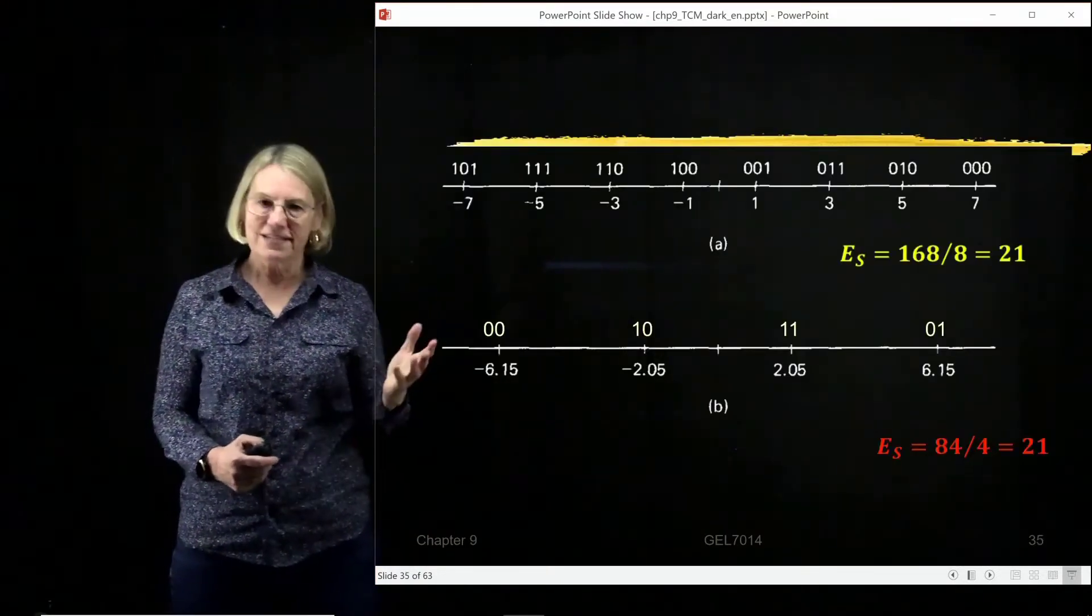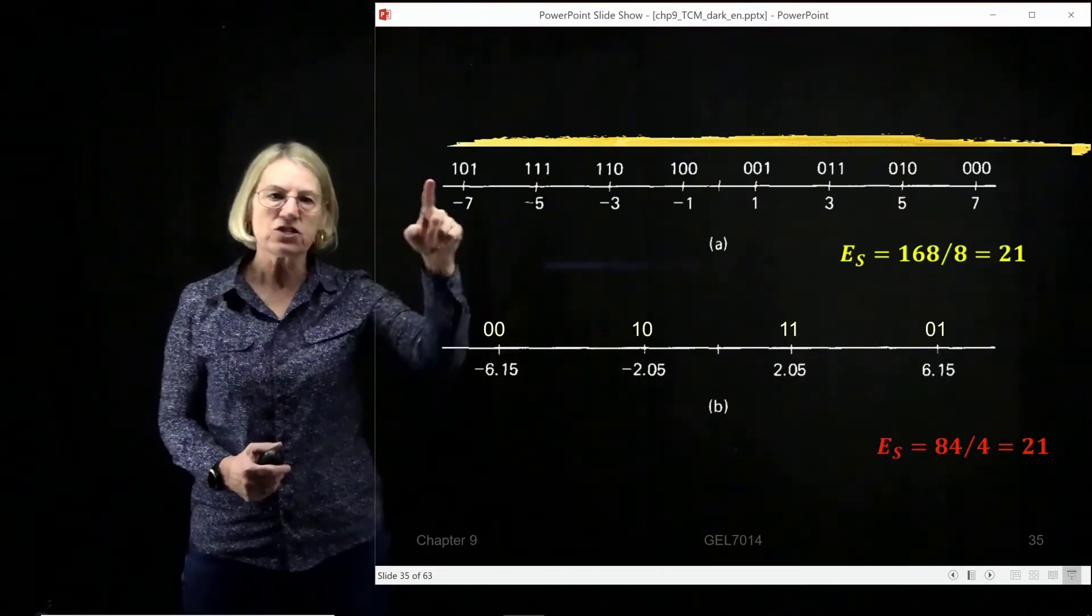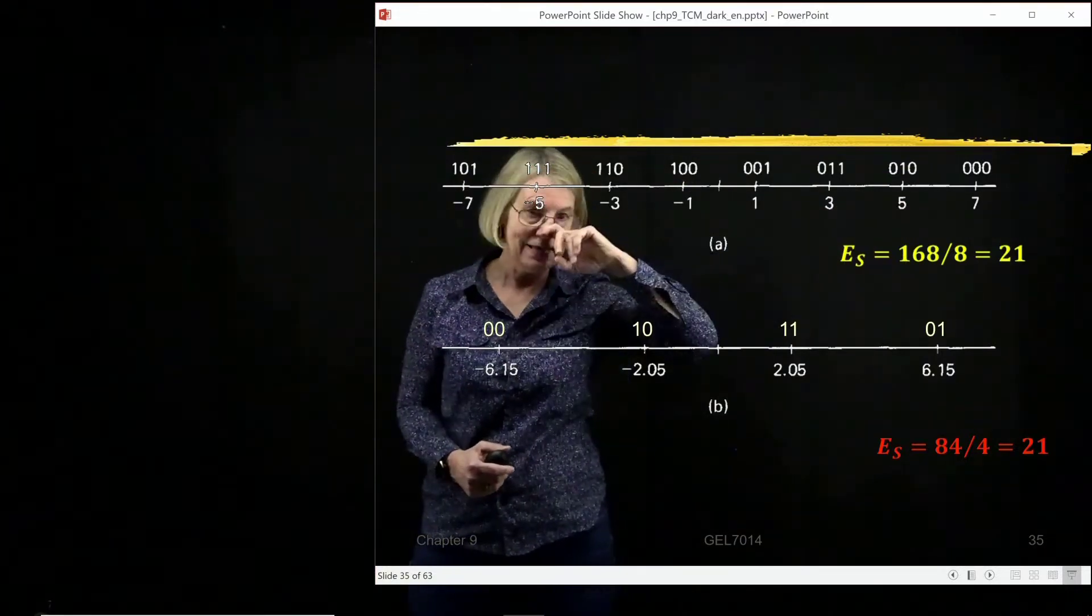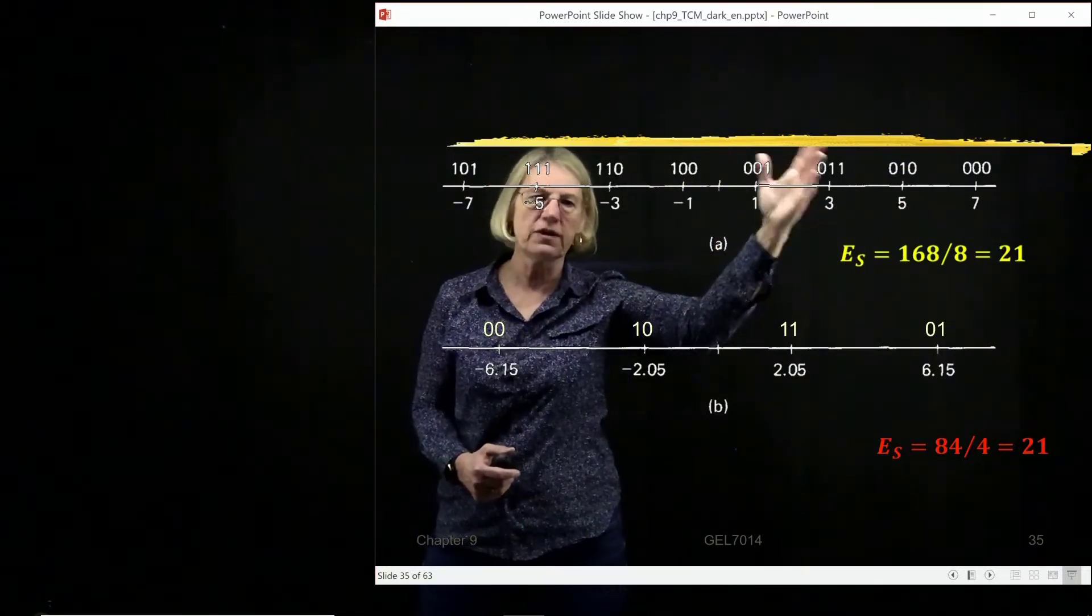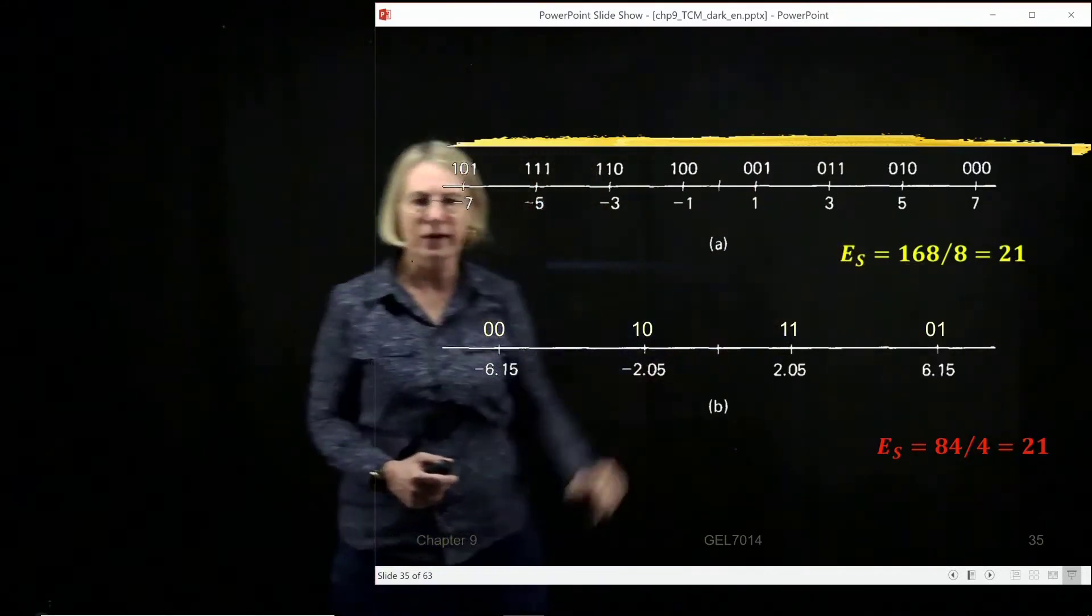So if I take these coordinates, how did I end up with these numbers here? How did I get those? Because if I do the average energy per symbol, so I add up the energy for 1, the energy for 3, 5, etc., I get 168. There's 8 of them, so the average energy comes to 21.